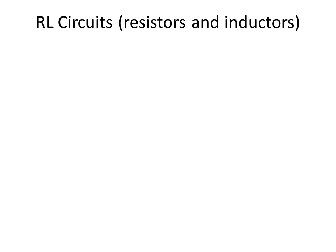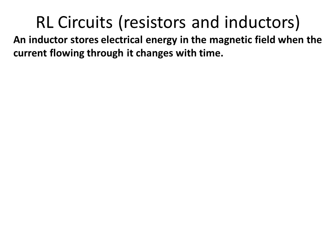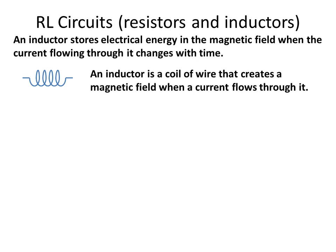This lecture looks at RL circuits — circuits that have resistors and inductors in them. An inductor stores electrical energy in the magnetic field when the current flowing through it changes with time. An inductor is a coil of wire that creates a magnetic field when a current flows through it.